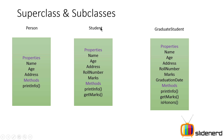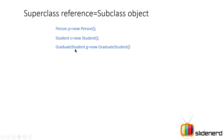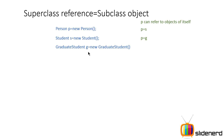Now let's look at the property: superclass reference variable equals subclass object. Normally you'd say Person p = new Person(), Student s = new Student(), GraduateStudent g = new GraduateStudent(). But a Person variable can also refer to a Student object or even a GraduateStudent object, since GraduateStudent is an indirect subclass. So p = s or p = g is perfectly valid.